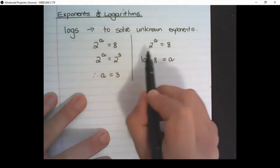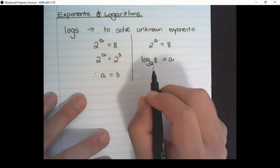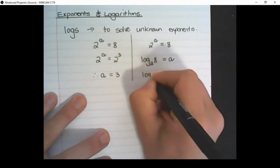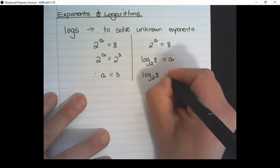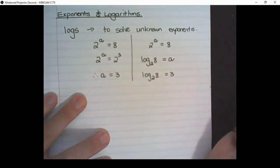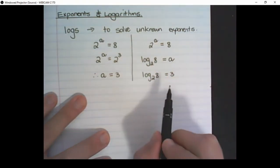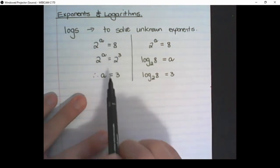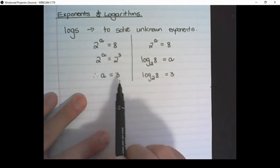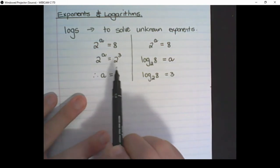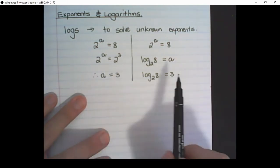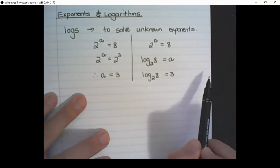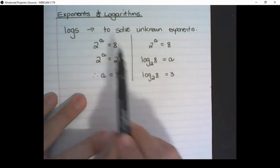And now if I solve this on a calculator, I would find that log base 2 of 8 is equal to 3. The reason why we use logs is because not everything would yield an integer or whole number. We can also find log values that are decimal, and they are not as easy to solve as these.